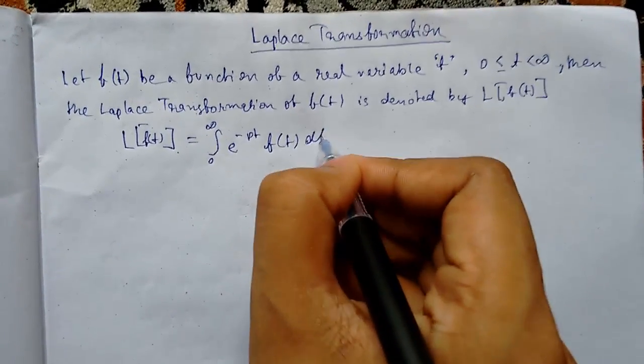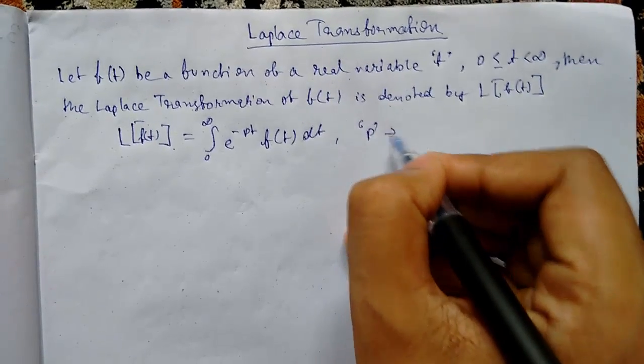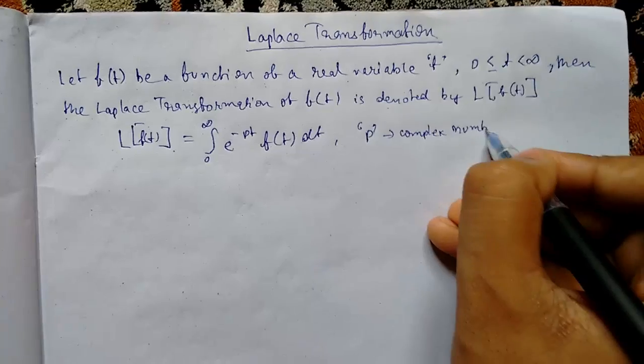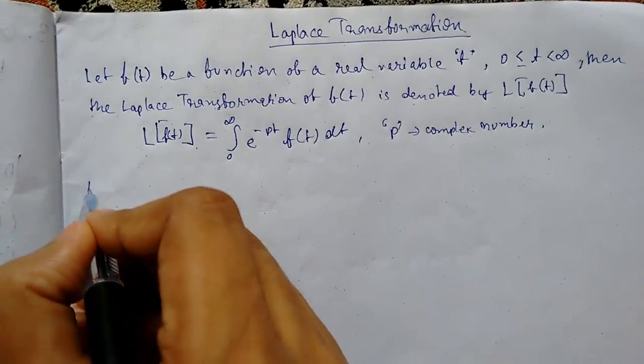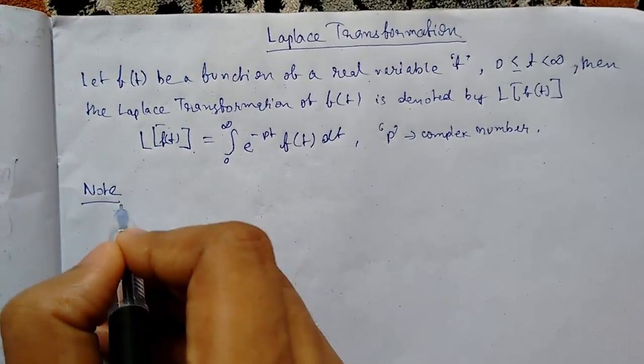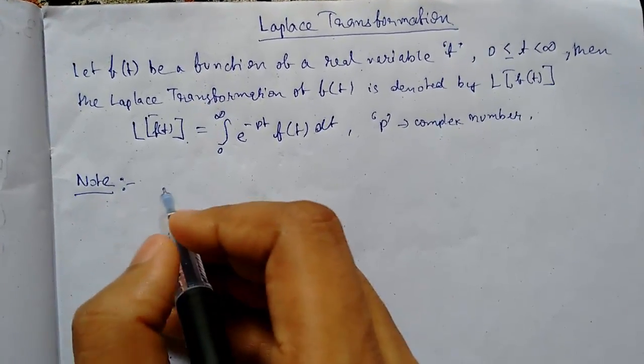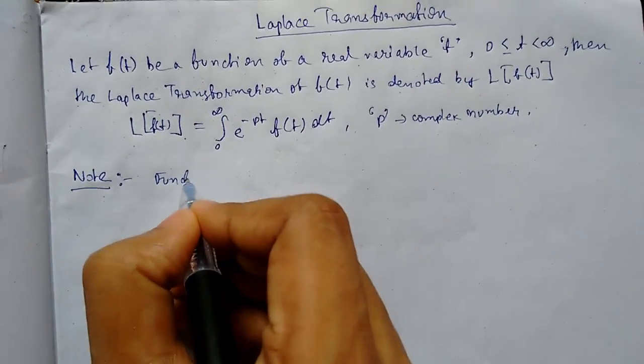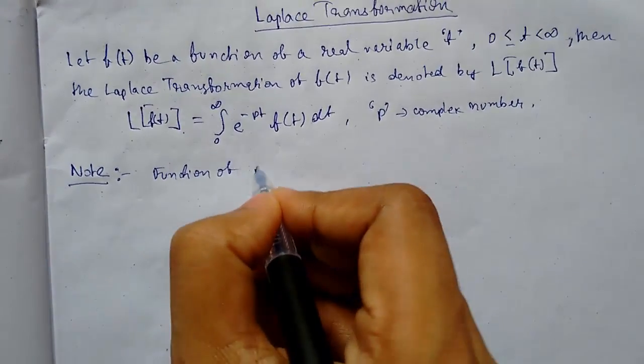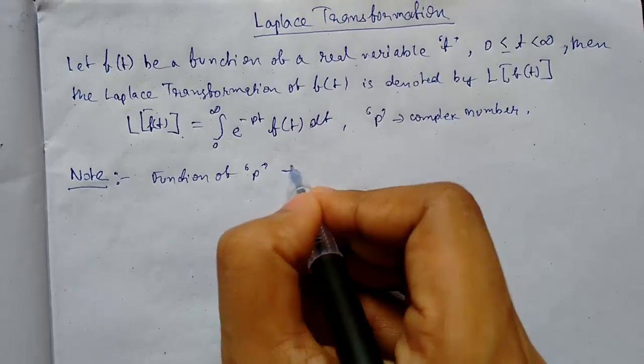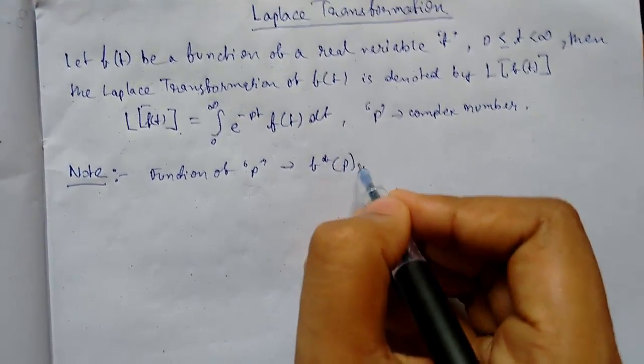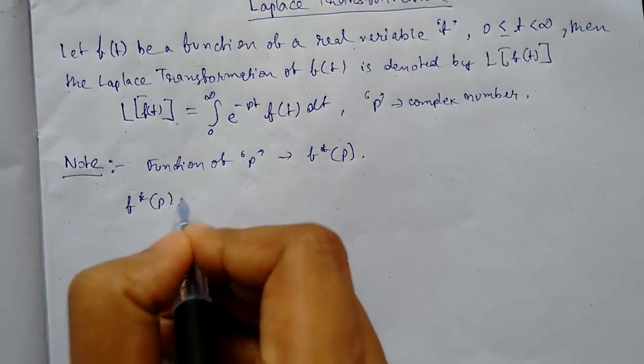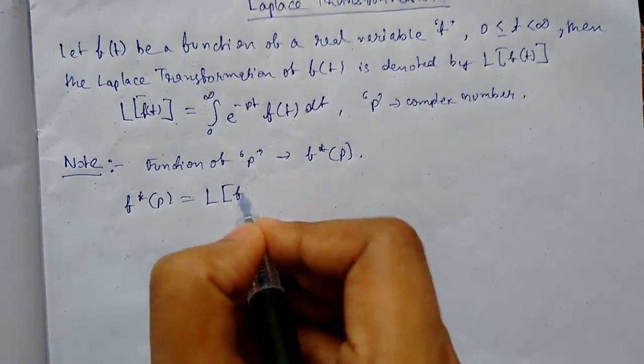Where p is a complex number. Now there is a note: since the Laplace transformation is a function of p, it can also be denoted as f star p. So hence we will get f*(p) equals L of f(t).